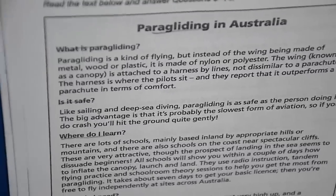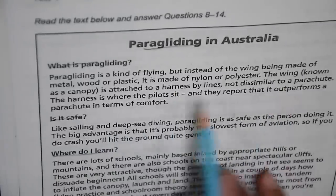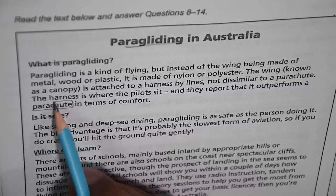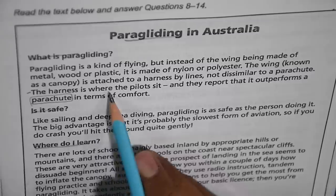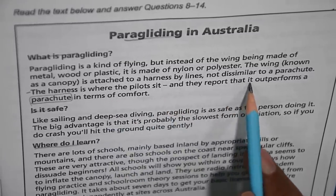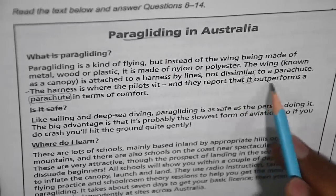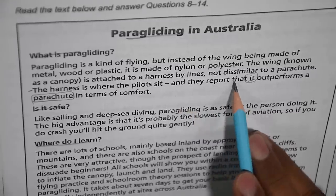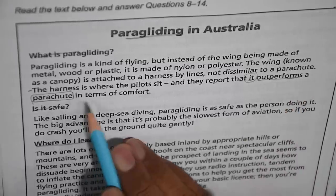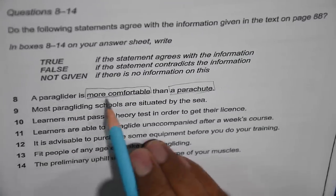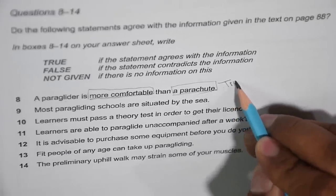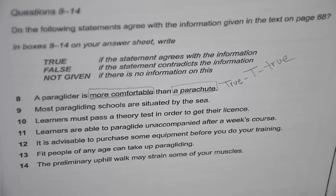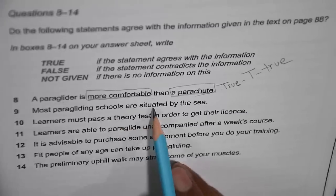I found the word 'parachute' in the passage. The sentence says the harness is where pilots sit, and that the paraglider outperforms a parachute in terms of comfort. 'Outperforms' means to be better in performance. So the statement — 'a paraglider is more comfortable than a parachute' — matches the passage. The answer to question 8 is True.